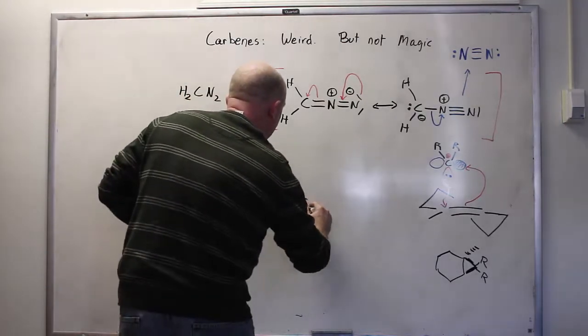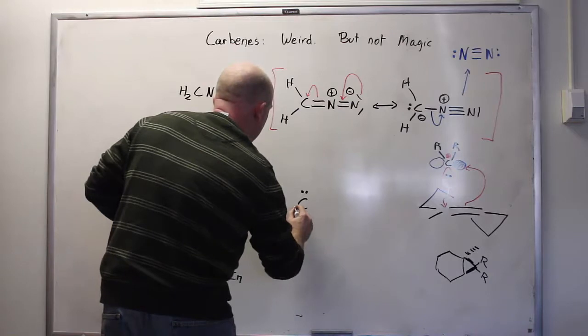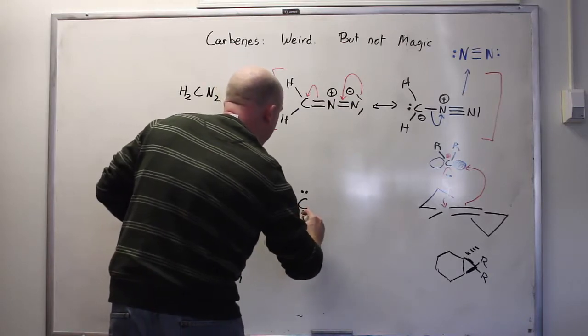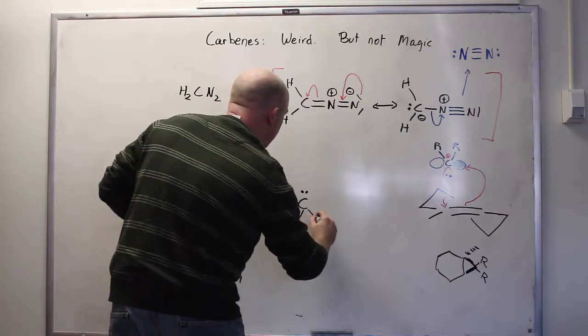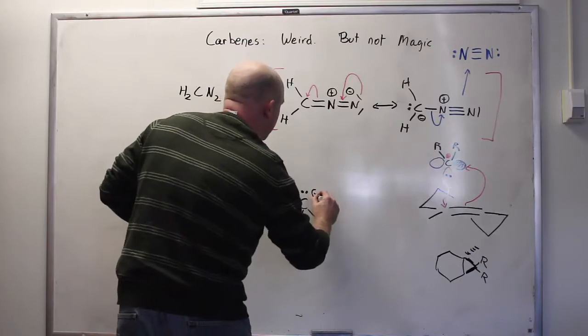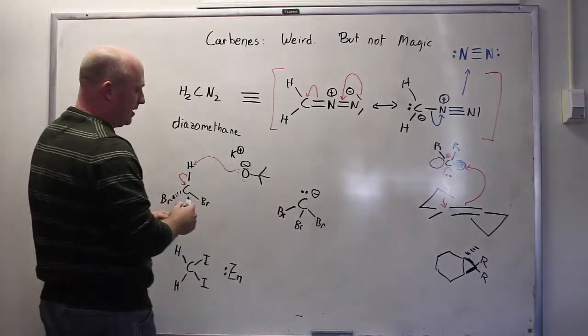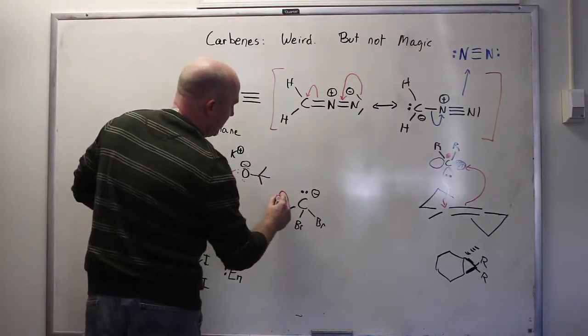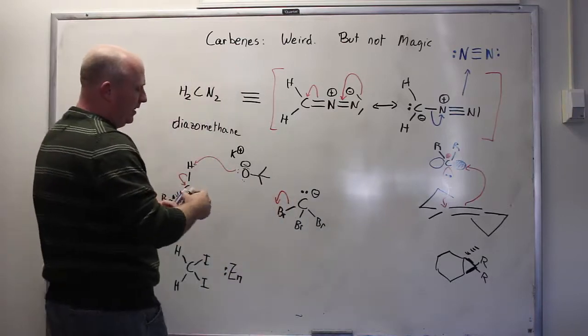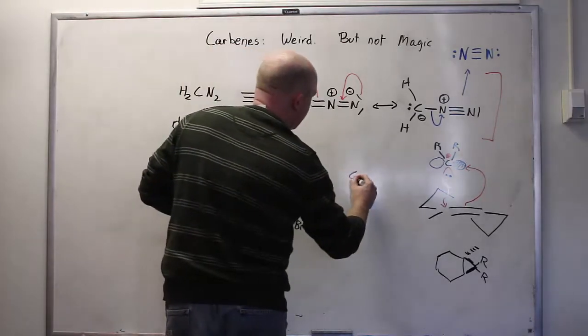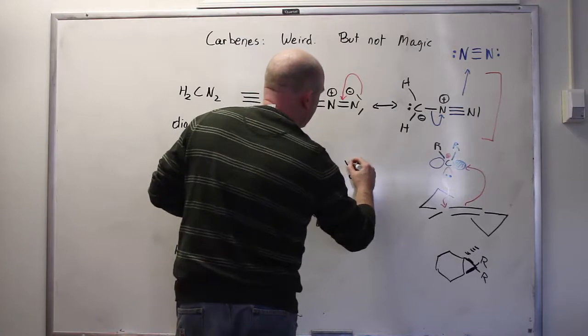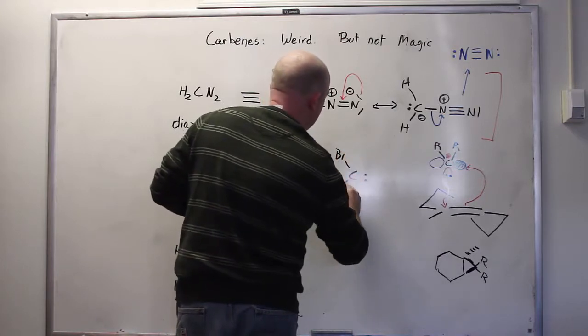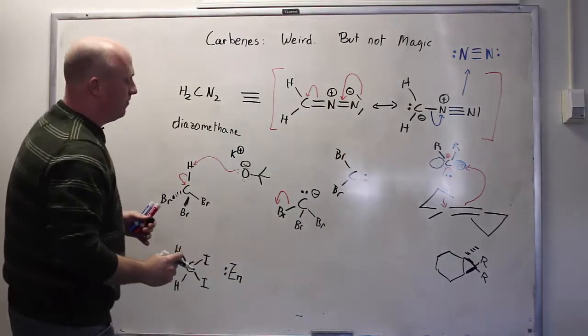That will lead to, in the interim anyway, a minus charge on the carbon, which is tolerated largely because you have all these bromides nearby, and really tolerated mostly because what happens next is one of these bromides simply leaves. So when that bromine leaves, what you're left with then is a carbon with a pair of electrons on it and two bromides. This then is the carbene that reacts further.